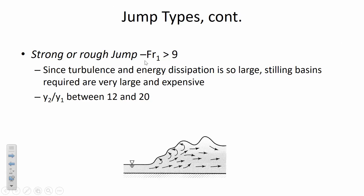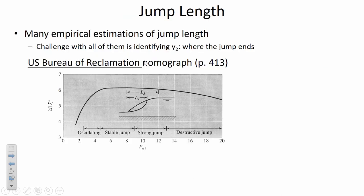Strong and rough jumps are pretty uncommon and avoided where possible. There are several empirical approaches to estimate hydraulic jump length; the book presents three. The Bureau of Reclamation — the western U.S. equivalent of the Army Corps of Engineers — has published a nomograph: if you know the Froude number before the jump, it classifies the jump type (undular, weak, oscillating, stable, rough) and gives you the ratio of jump length L_j to downstream depth Y2.